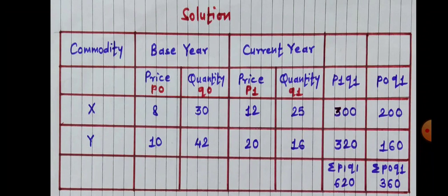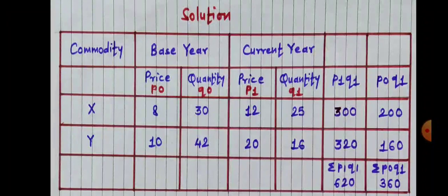After that, we have to find out P0Q1, i.e. P0 multiplied by Q1. 8 into 25 equals 200; 10 into 16 equals 160. After finding out P0Q1, we have to find out Sigma P0Q1, which is the summation of all P0Q1. So 200 plus 160 equals 360. Sigma P0Q1 is equal to 360.